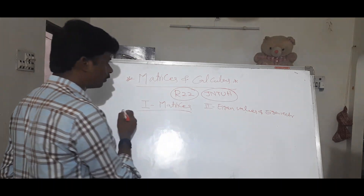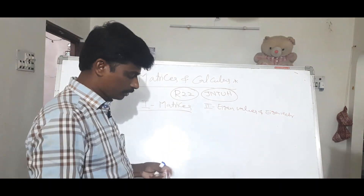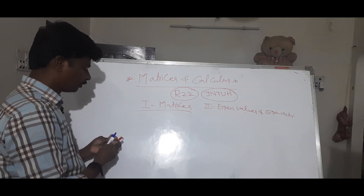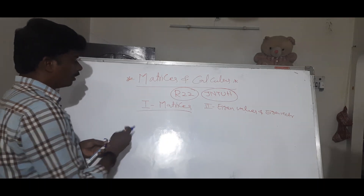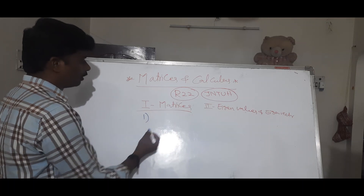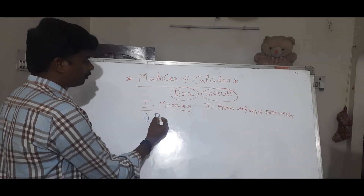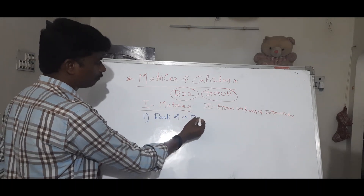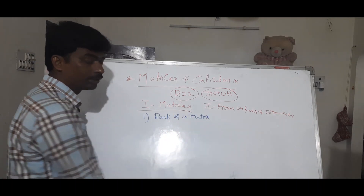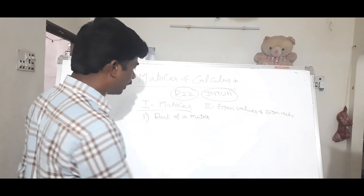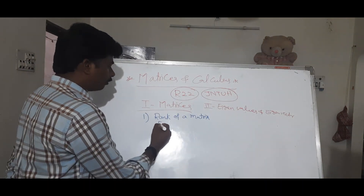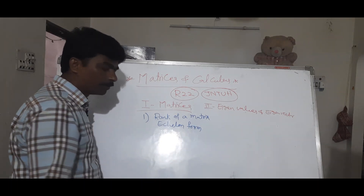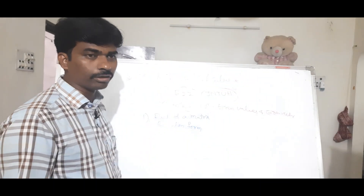First we discuss about matrices. Number one: definition — rank of a matrix. Rank of a matrix, and echelon form. We discuss echelon form and finding the k value.